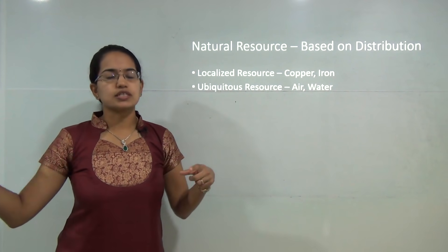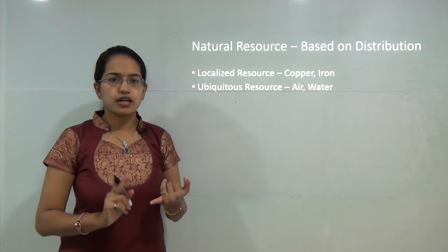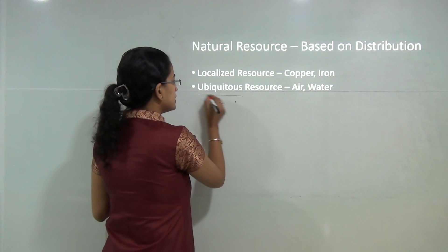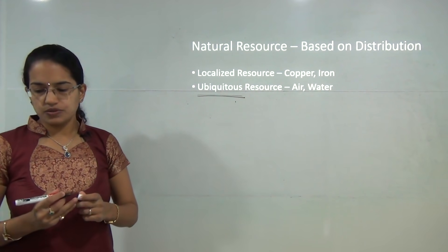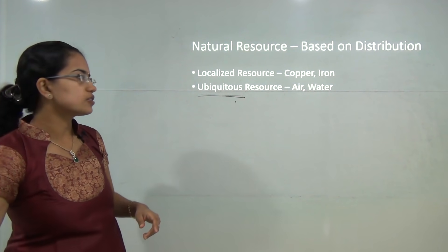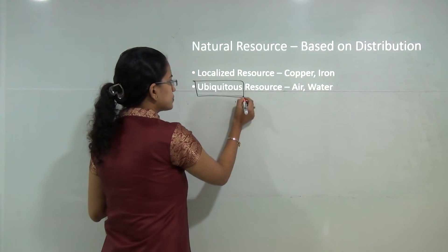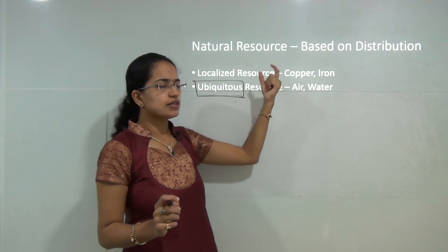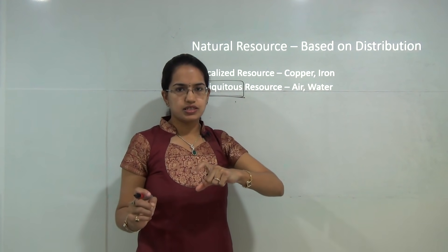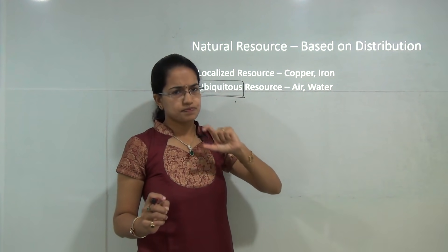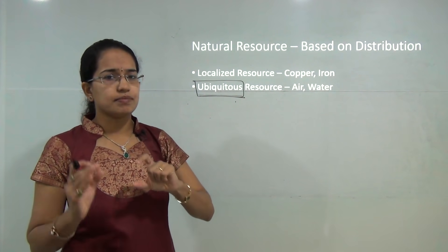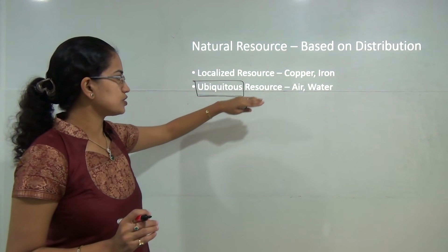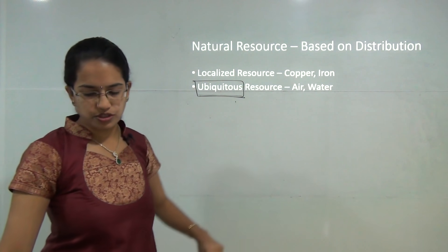Some resources are present throughout the globe — for example air and water. Things which are present universally are known as ubiquitous resources; I can find them in each and every corner of the earth. On the other hand, there are localized resources which are present in specific regions — for example, copper resources, iron resources, and similar mineral resources which are present in specific locations.